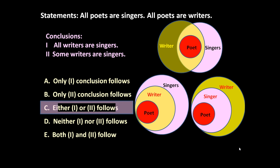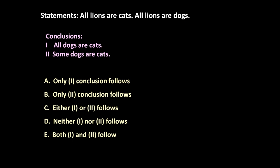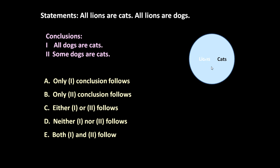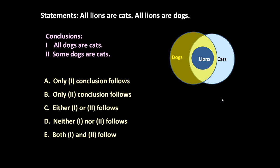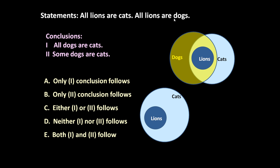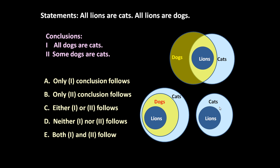Let us solve one more similar type of problem. The statements are: all lions are cats, and all lions are dogs. The conclusions are: all dogs are cats, or some dogs are cats. To answer this, let us represent the statements using Venn diagrams — all lions are cats, all lions are dogs — which can be drawn in three different ways.